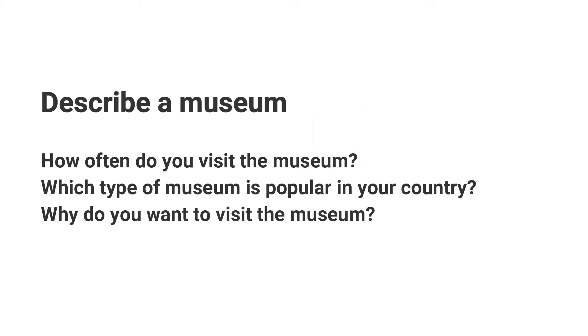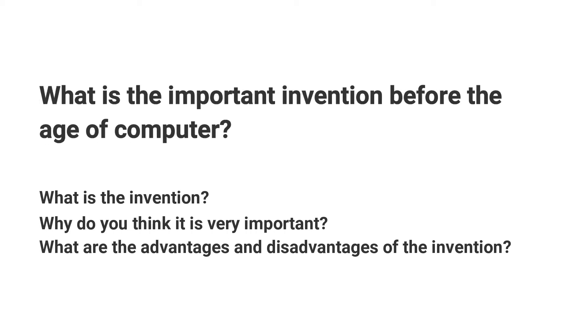Here are some examples of topics one may get in speaking exam section 2. Describe a museum — how often do you visit the museum, which type of museum is popular in your country, why do you want to visit the museum. Another topic: what is an important invention before the age of computers — what is the invention, why do you think it is very important, what are the advantages and disadvantages of the invention?